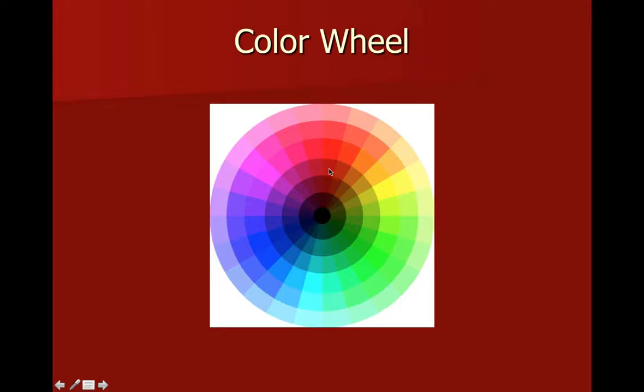As we add black we get our shades until we get pure black, and as we add white we get our tints moving outward until we get pure white. So this is just a nice way to map out harmonious relationships in color.